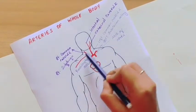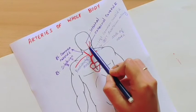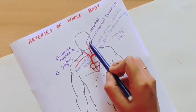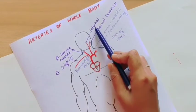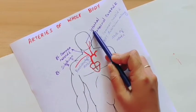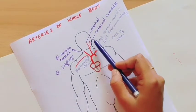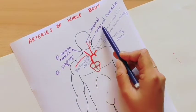This is the left and right common carotid artery. This branch divides into the internal carotid artery and the external carotid artery. The internal carotid artery supplies the eyes and brain, while the external carotid artery supplies the face, scalp, and nose.